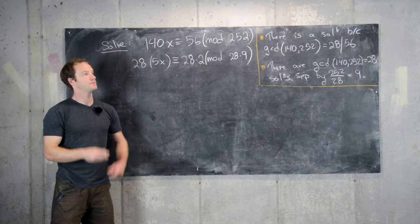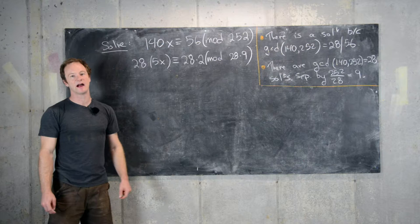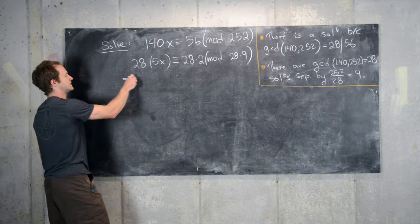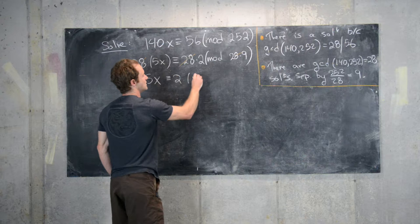And I have another video where we talk about linear congruence of this form and the fact that if you have a common multiple in all of these parts, you can divide it out. So that means if x satisfies this linear congruence, then that means x satisfies the linear congruence where we cancel the 28. So in other words, we have 5x is congruent to 2 mod 9.